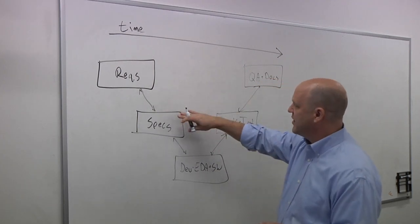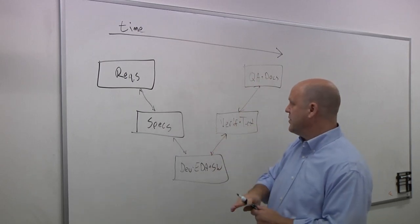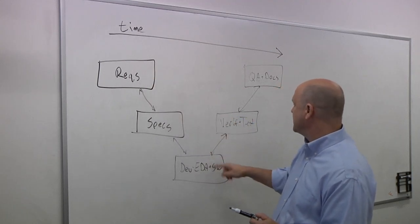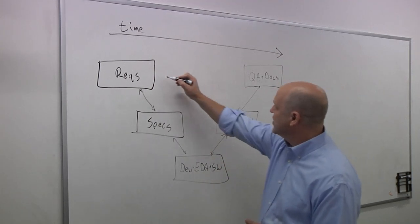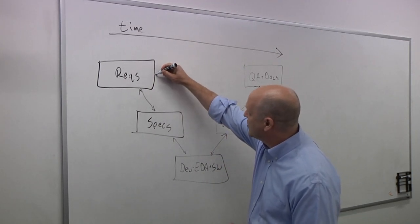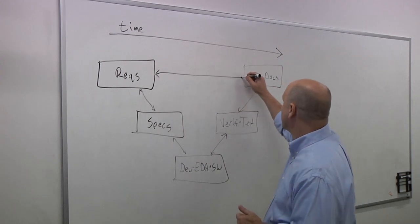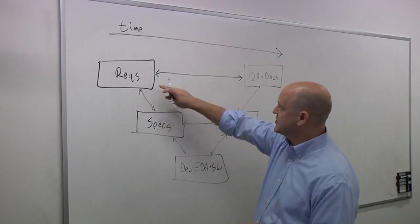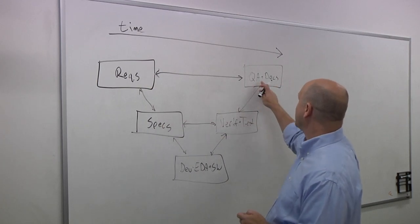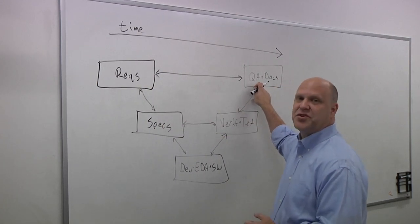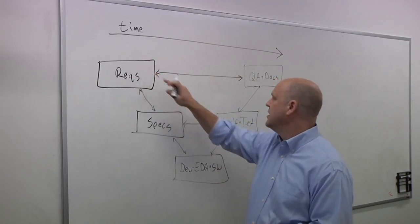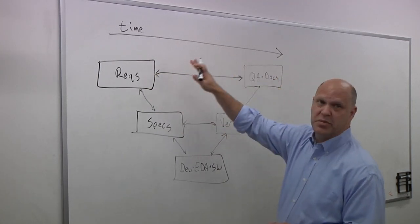So these standards specify traceability between each of these different places here. So we call this along the V. So there has to be some traceability here. So if you make a change anywhere else, you make a change in the spec, it changes a requirement, it changes an implementation. Also, there is traceability across the V. So for example, when you're done with your product, your QA people are comparing the products' features and capabilities versus the requirements that were specified at the beginning. And the documentation is also based upon that.